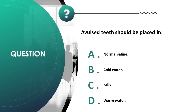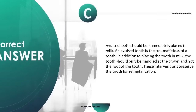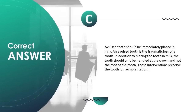Avulsed teeth should be placed in: A) normal saline, B) cold water, C) milk, D) warm water. Correct answer is C. Avulsed teeth should be immediately placed in milk. An avulsed tooth is the traumatic loss of a tooth. The tooth should only be handled at the crown, not the root. These interventions preserve the tooth for re-implantation.